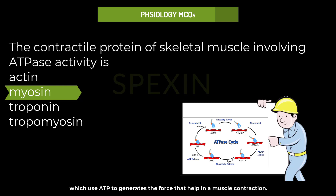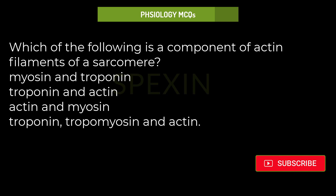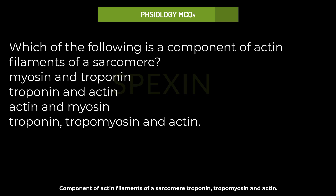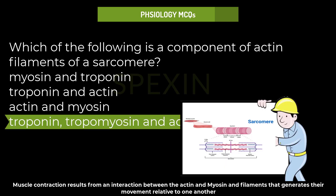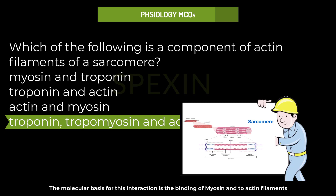Which of the following is a component of actin filaments of a sarcomere? Options: myosin; myosin and troponin; troponin; troponin and actin; actin and myosin; or troponin, tropomyosin, and actin. The components of actin filaments of a sarcomere are troponin, tropomyosin, and actin. Muscle contraction results from an interaction between actin and myosin filaments, with myosin binding to actin and functioning as a motor that drives filament sliding.